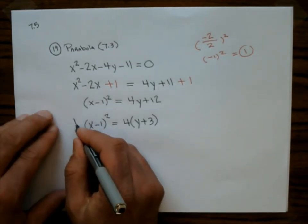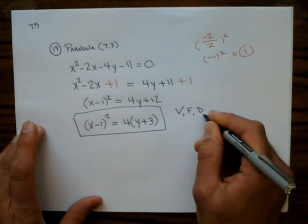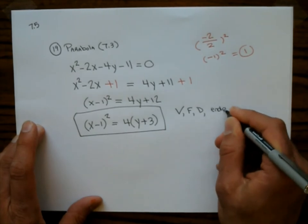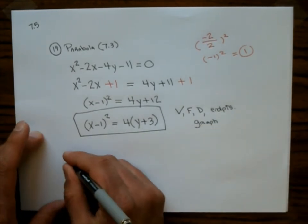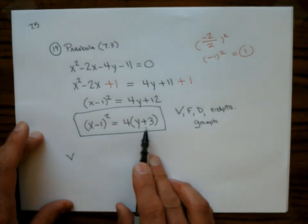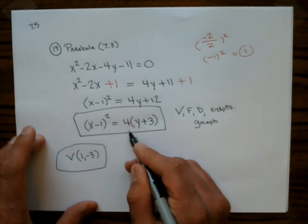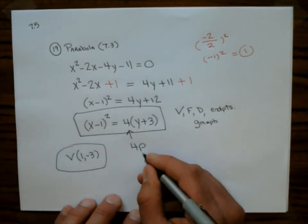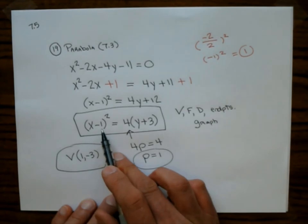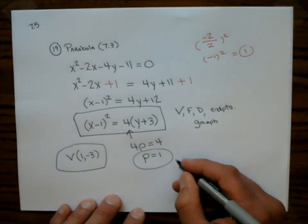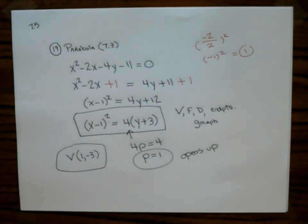In standard form (x minus 1) squared equals 4(y plus 3), the vertex is (1, negative 3). The coefficient 4 equals 4p, so p equals 1. Since it's an x-squared parabola and p is positive, it opens upward. The focus is p units above the vertex at (1, negative 2). The directrix is p units below the vertex: y equals negative 4.